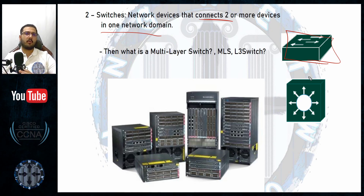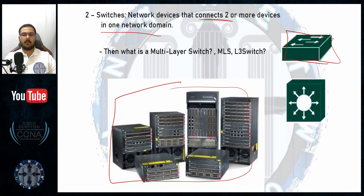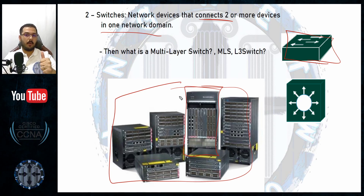Hubs and bridges are obsolete — it's 2021 and they haven't been manufactured for over 10 years, so don't waste your time studying them. Switches are what's used today. They look physically similar to routers, so you need to identify them either by model number or by their port density. I've already covered Cisco router models, and I'll cover switch models next.